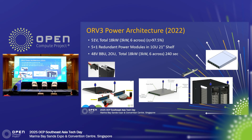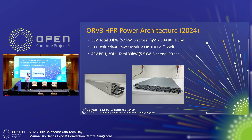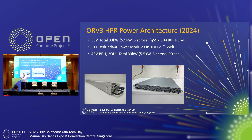That's ORV3, which was the standard until just recently when AI came along and said 15 kilowatts plus one is not enough — I need 30 kilowatts, 60 kilowatts. The GB200 needs 120 kilowatts in a rack. So we needed something new: ORV3 HPR. We went from 3 kilowatts per power supply to 5.5 kilowatts per power supply, so that shelf now has 33 kilowatts in it.